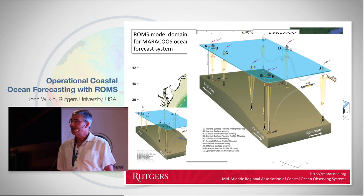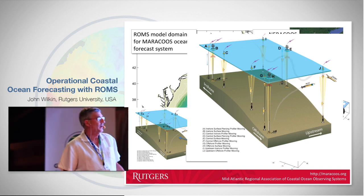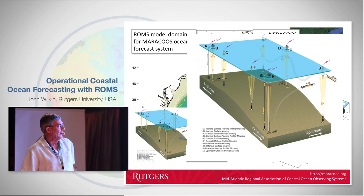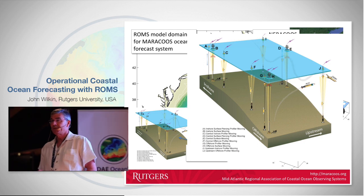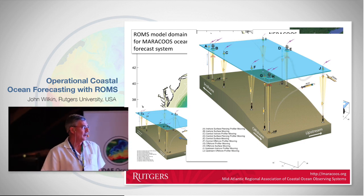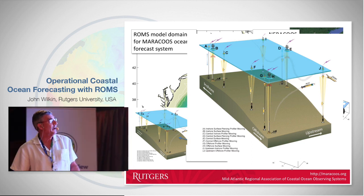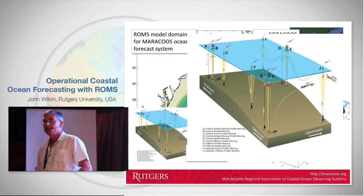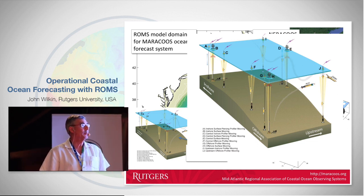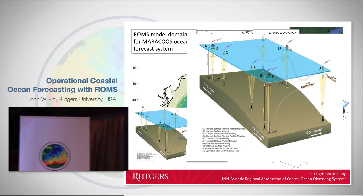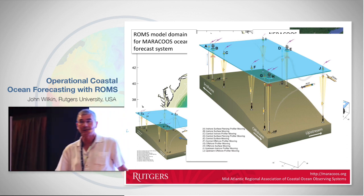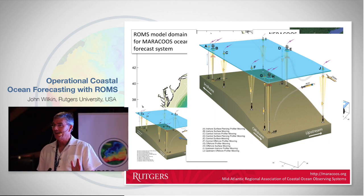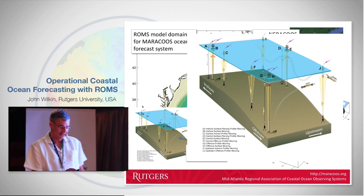We ran that model. I said it's a relatively data-rich area. We've got two regional associations of IOOS: NERACOOS and MARACOOS. Right in the middle of the domain, we have this very intensive observing experiment from the National Science Foundation Ocean Observatories Initiative — the Pioneer Array — which is 12-37 surface-to-seafloor moorings with profiling CTDs, moored acoustic Doppler current profilers, autonomous glider operations, and AUV REMUS operations.